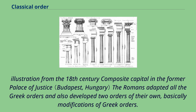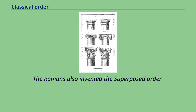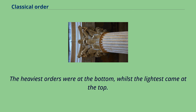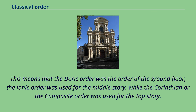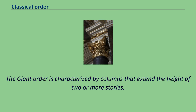The Romans adapted all the Greek orders and also developed two of their own: the Tuscan and the Composite — respectively the plainest and most ornate of the orders — though it was not until the Renaissance that these were formally named. The Romans also invented the superposed order, where successive stories of a building have different orders: the heaviest at the bottom and lightest at the top — Doric on the ground floor, Ionic for the middle story, and Corinthian or Composite for the top. The giant order, invented by architects in the Renaissance, is characterized by columns that extend the height of two or more stories.